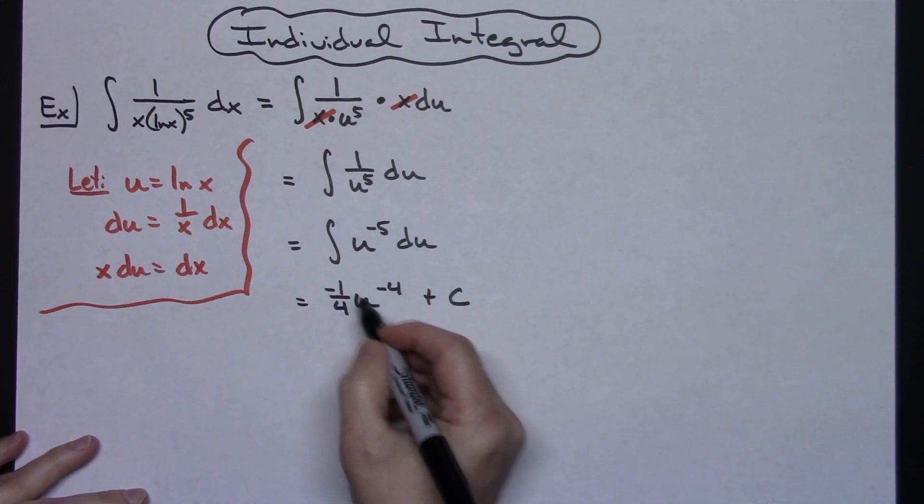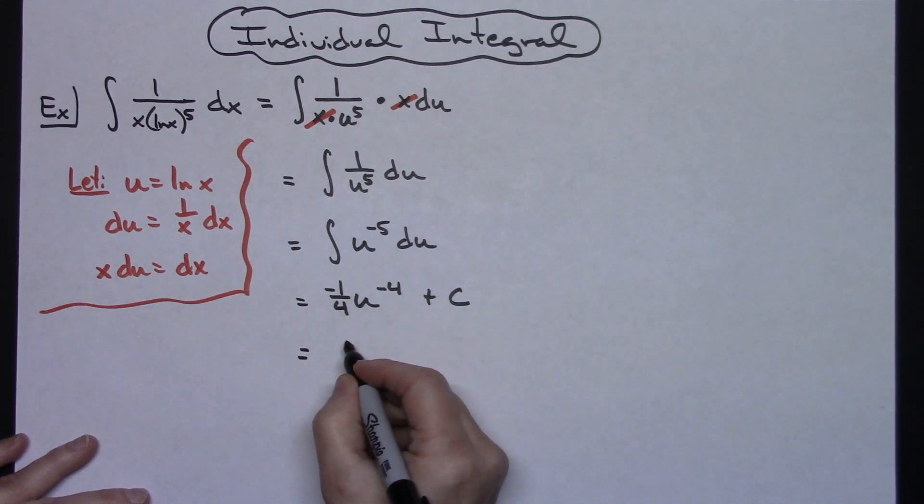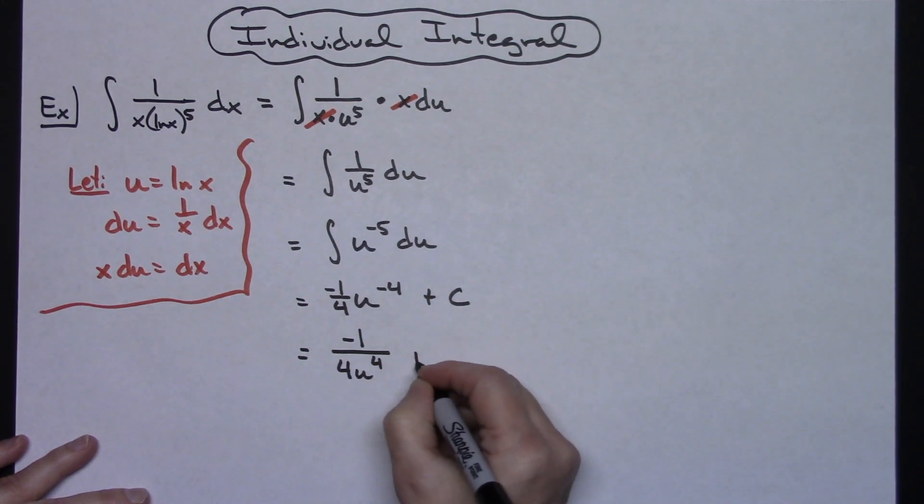I'm going to do one more step before I substitute back in. That u to the negative 4 I'm going to bring back down to the bottom. So then kind of just rewriting it we'll have negative 1 on top and then we'll have 4u to the fourth plus c.